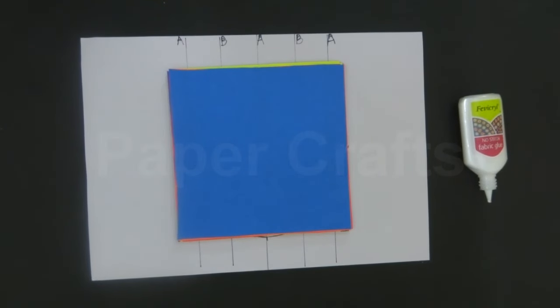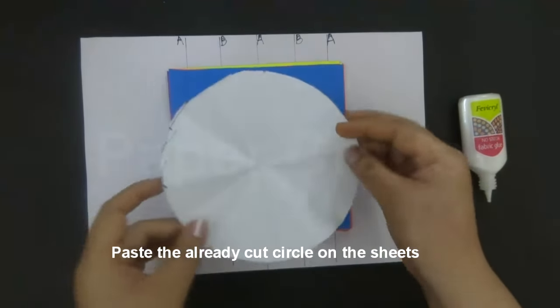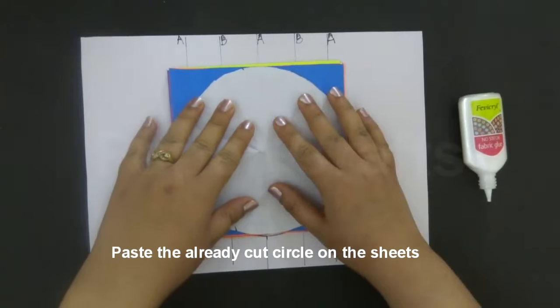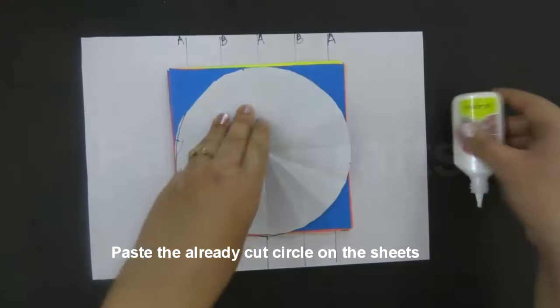Once we have finished pasting all the sheets keep it aside for five minutes to allow it to dry. Then take the already cut circle and paste it over the sheets with the help of glue.